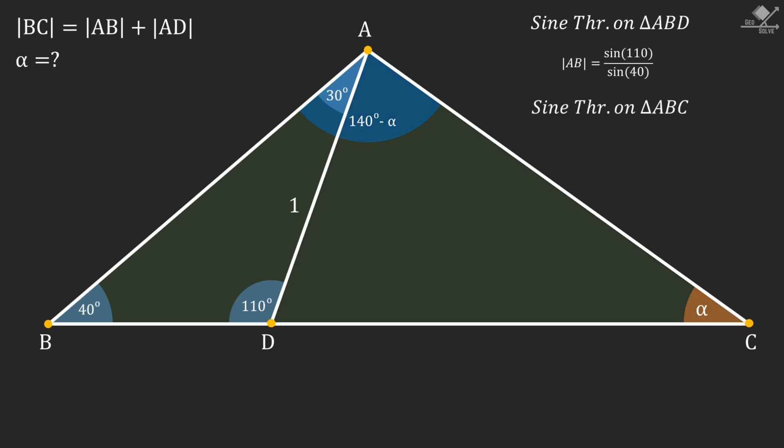Now, let's apply sine theorem on triangle ABC. And from this triangle, we will have BC over sine of 140 minus alpha equals AB over sine alpha. Rearranging the terms for BC, we will have this relationship.